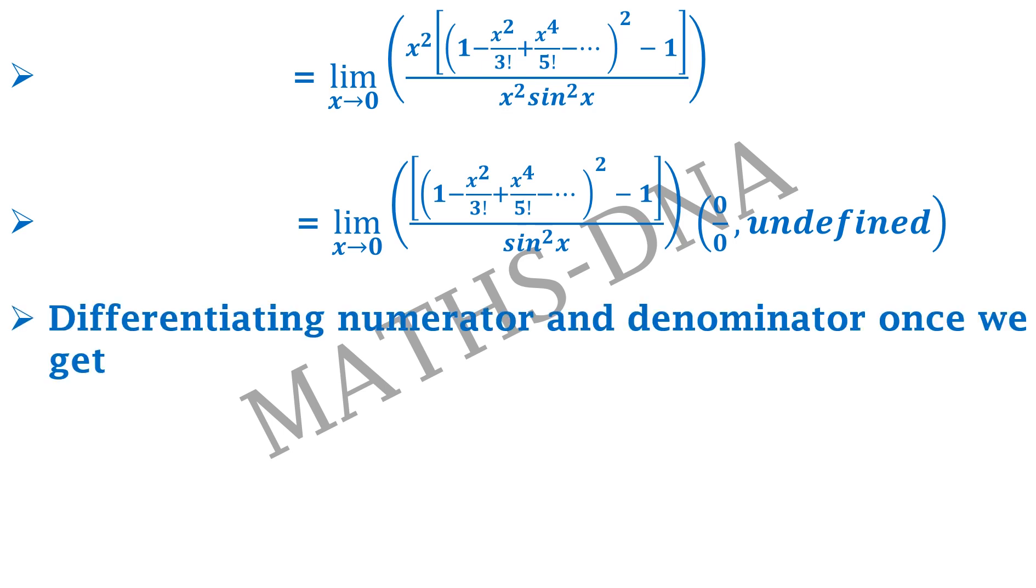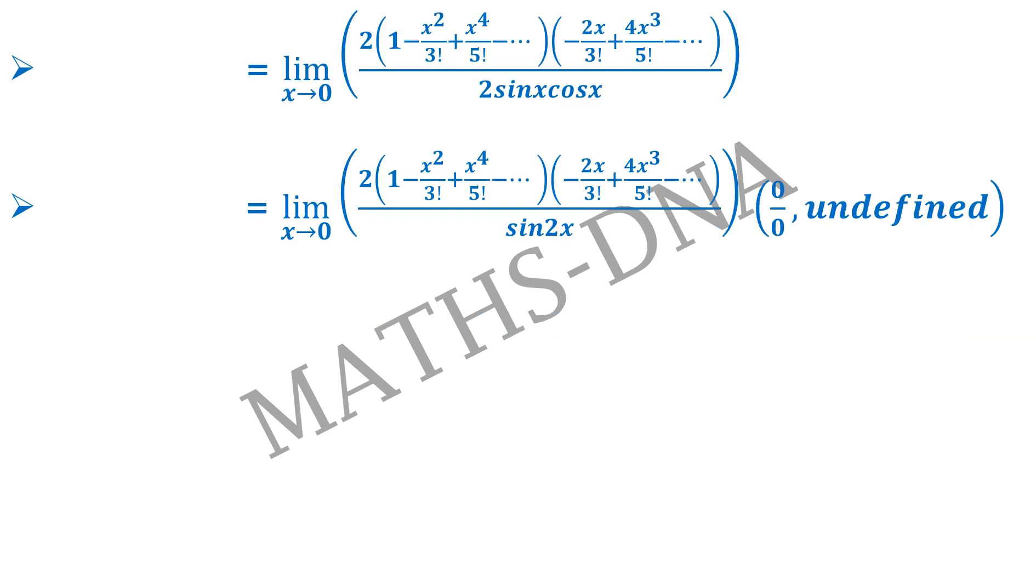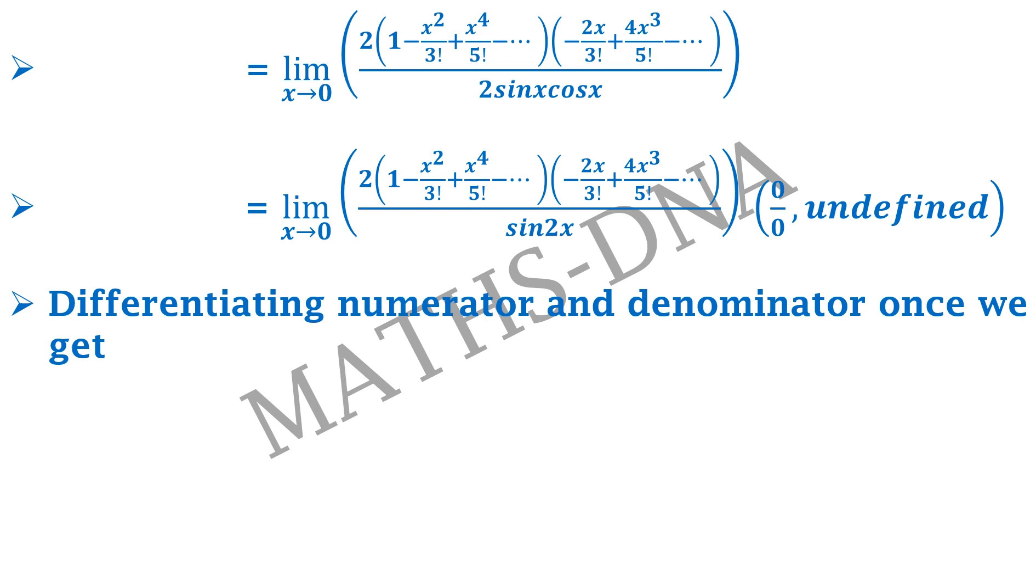So now we differentiate the numerator and denominator to get the result. That will give us limit x tends to 0, 2 into 1 minus x square upon 3 factorial plus x raise to 4 upon 5 factorial into applying the chain rule, minus 2x upon 3 factorial plus 4x cube upon 5 factorial and so on. This will give us the term limit x tends to 0, 2 into 1 minus x square upon 3 factorial plus x raise to 4 upon 5 factorial into minus 2x upon 3 factorial plus 4x cube upon 5 factorial divided by sin 2x, and that will be again 0 upon 0 undefined form.